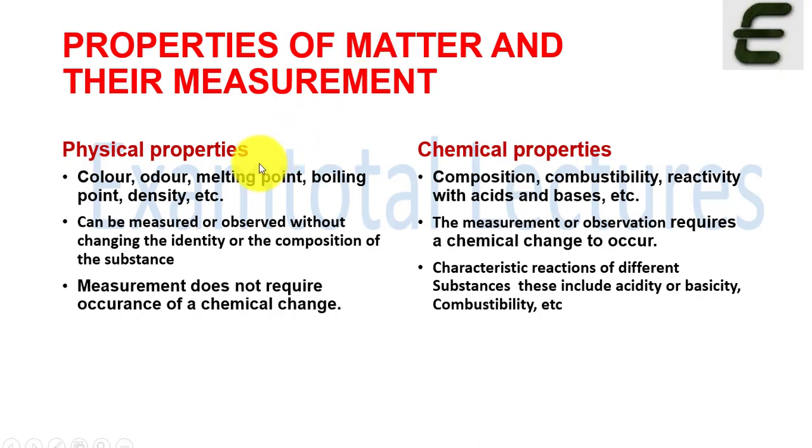We can also distinguish matter on the basis of various properties. Properties of matter are classified into two types: one is physical property and the other type is chemical property. Physical properties include parameters like color - different compounds have different colors - then odor which means smell, melting point, boiling point, and density. These are the physical parameters. In chemical properties, we see composition, what are their components, what is their ratio, combustibility, and reactivity with acids and bases.